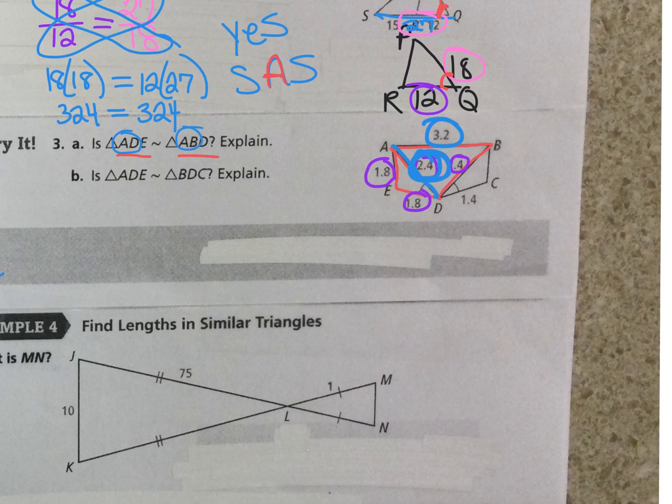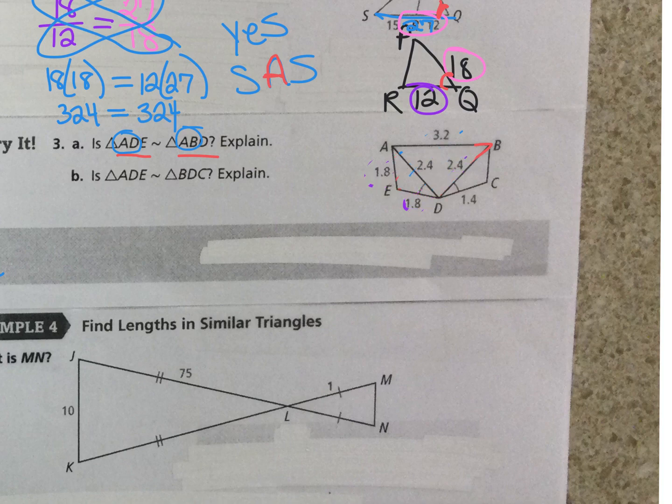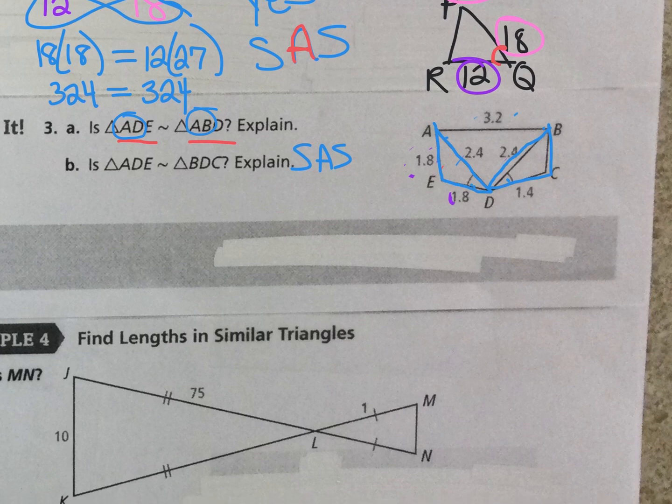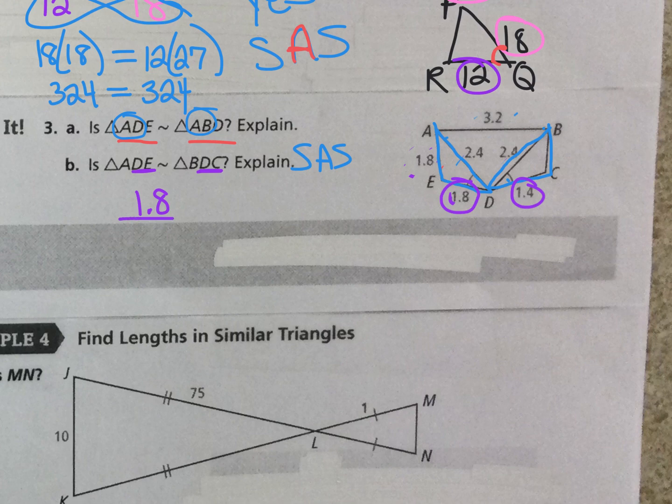Now, if we look at B, and I'm going to erase all this over here. If we look at problem B, it says is A, D, E similar to B, D, C. So now this would have to be side, angle, side because I know I have an angle, right? And if I look here on the one side, I have DE is 1.8, and it matches to DC, 1.4. Then I have that blue angle. And then I have this side, AD, which is 2.4, and it has to match to BD, which is 2.4.